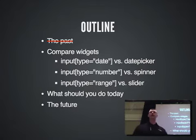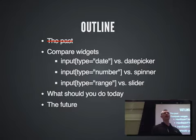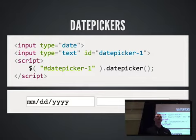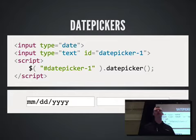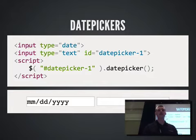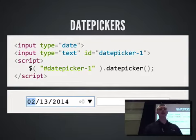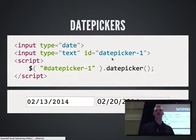The first example I always bring up is the date picker, because it's the most common example. From download statistics and analytics on jQuery UI, we know the date picker is by far our most popular widget — almost two or three times more popular than any other one. When you compare head-to-head, input type date is as simple as giving an input a type of date, and you get Chrome's implementation of a calendar. jQuery UI's date picker — you select the element with a selector, call the date picker plugin, and then you have a date picker.